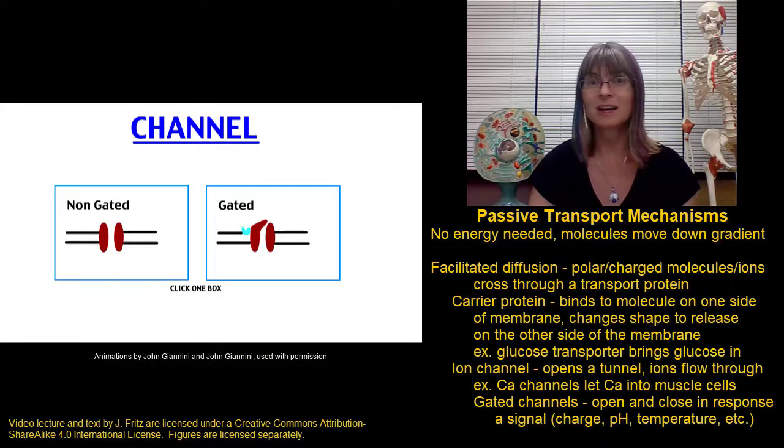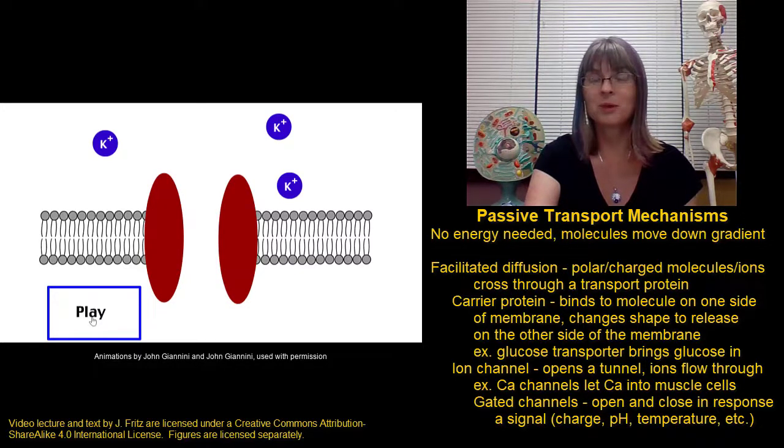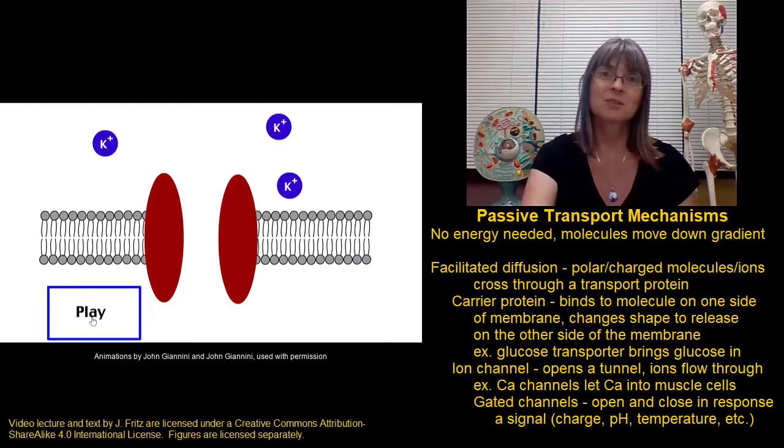Let's look at an animation of ion channels. In this non-gated channel, ions simply flow through the tunnel that's formed through the plasma membrane. Here are potassium ions moving from the outside to the inside of a cell.